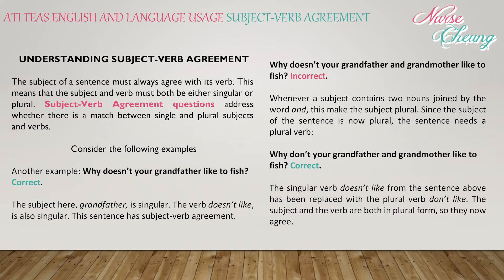Let's take a look at a few more examples. 'Why doesn't your grandfather like to fish?' — this is correct. The subject, 'grandfather,' is singular, and the verb 'doesn't like' is also singular, so the sentence has subject-verb agreement.